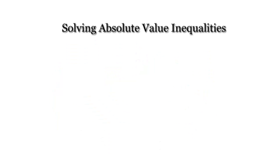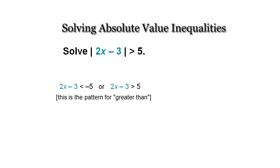All right, let's take a look at the other case where you have the greater than symbol. So we have the absolute value of 2x minus 3, and it's greater than 5. This also works for greater than or equal to. So whenever you see this absolute value inequality where it's greater than the number, you want to use the OR compound inequality.